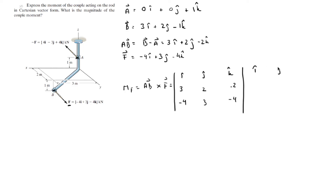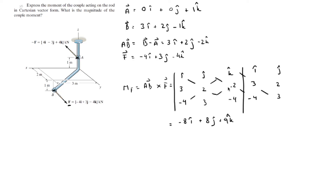We rewrite the first and second columns (-4 and 3) and compute the positive diagonals: -8i + 8j + 9k. Then we subtract the negative diagonals, giving +8k, +6i, and +12j. Adding the i's, j's, and k's together gives the Cartesian vector form of the moment: -2i + 20j + 17k.